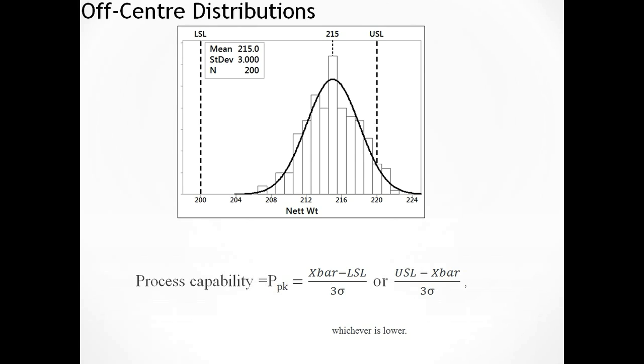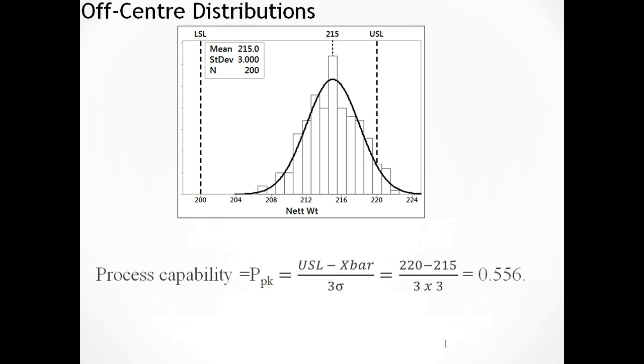Let's have a look at how the maths works out. And this time we get a process capability value of 0.556, which is much lower than what we had before. So if I only had the PP value and the PPK value, and I knew the PP value was greater than one, I would know that my distribution can fit within my spec limit. And then if I saw my PPK value was less than one, without looking at the distribution and the spec limits graphically, I would know that that process is off centered. So these numbers can come in quite useful when you compare the two.